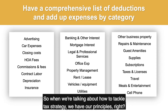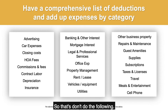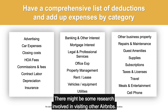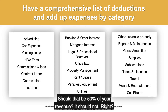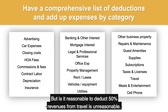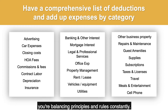When tackling tax strategy, we have principles — keep things reasonable — and we have rules, which tell us what not to do. If your business is Airbnb, I expect there would be some travel and research involved in visiting other Airbnbs. Should that be 50% of your revenue? It should not. The rules don't say you can't deduct travel, but is it reasonable to deduct 50% of revenues from travel? It is unreasonable. So it's very important when looking at business deductions that you're balancing principles and rules constantly.